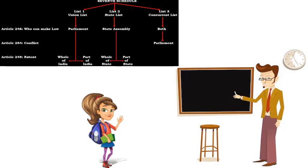Article 254 of the Constitution talks about the situation when conflict arises between laws made by the Parliament and the State Assemblies. As per this article, in case of conflict, Parliament shall prevail. State can also prevail if it gets the assent of the President. Article 245 of the Constitution specifies the extent of laws made by Parliament or the State Assemblies. Laws made by Parliament may extend to the whole of India or part of India. However, laws made by the State Assembly may extend to the whole of the State or part of the State.